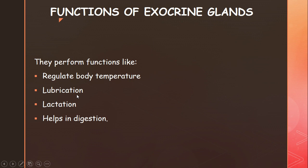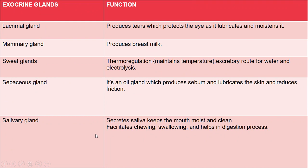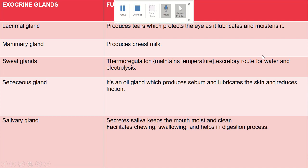The functions of exocrine glands include: regulating body temperature, lubrication, and moisturizing. The lacrimal gland produces tears which protect the eyes by lubricating and moistening them. Tears keep the eyes clean and protected. If we wash our eyes, they are lubricated and moisturized.